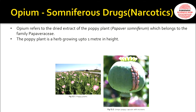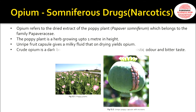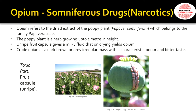The drug is extracted from this milky fluid. It is an herb that grows up to 1 meter in height. The unripened fruit capsule gives a milky fluid which, on drying, yields opium. Crude opium is dark brown or grayish in color, irregular in mass, and has a characteristic odor and bitter taste.